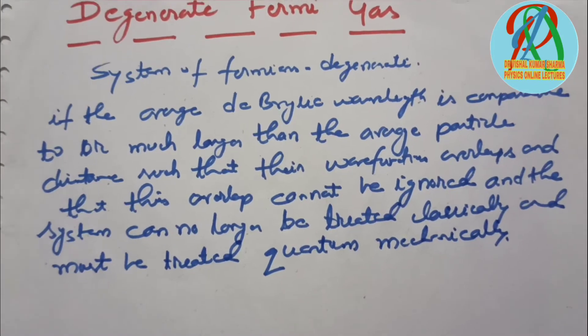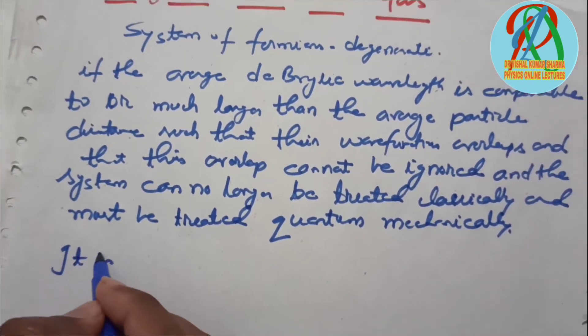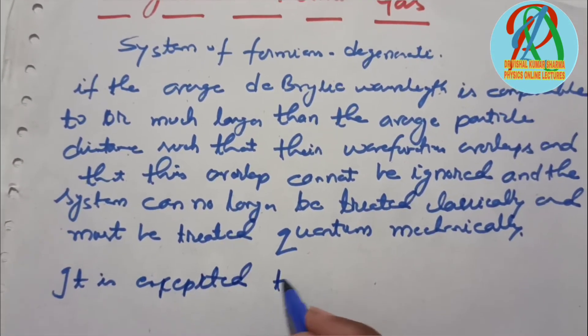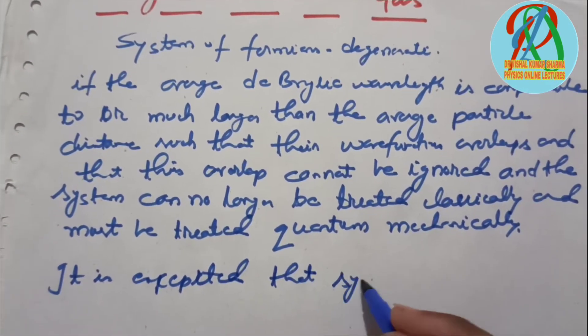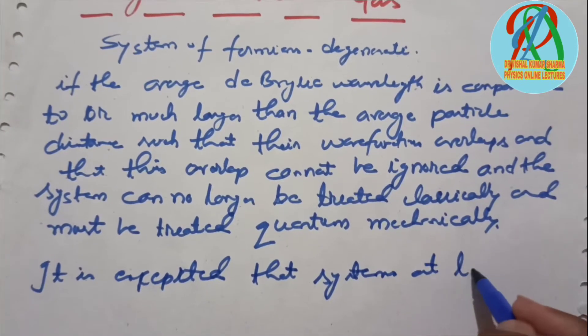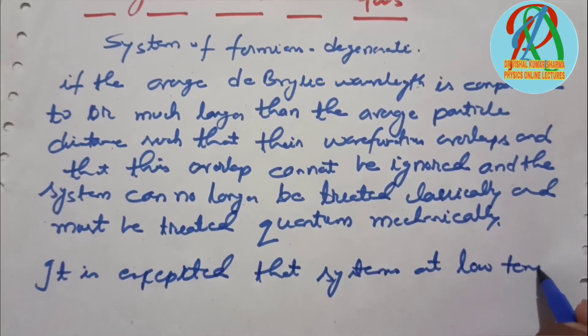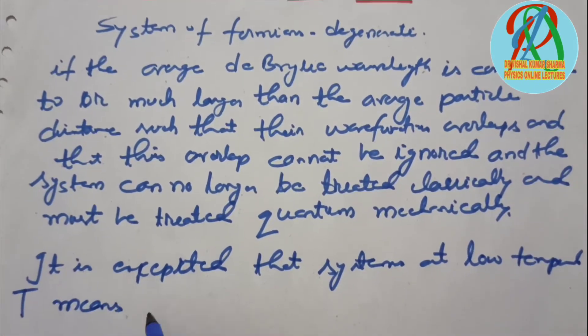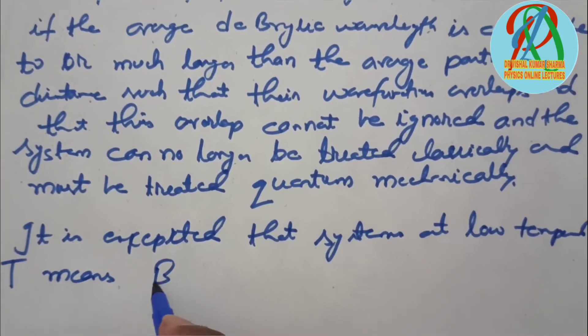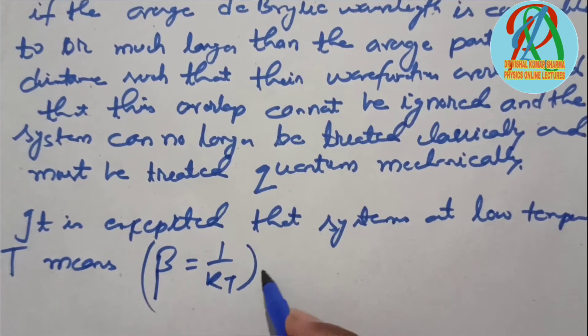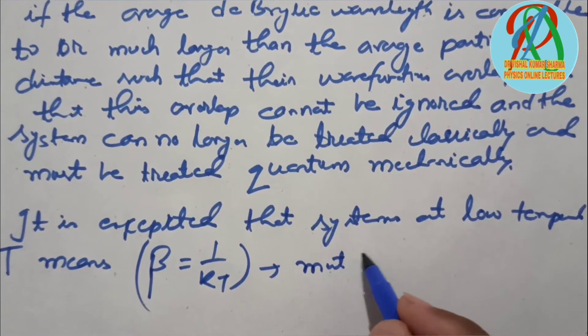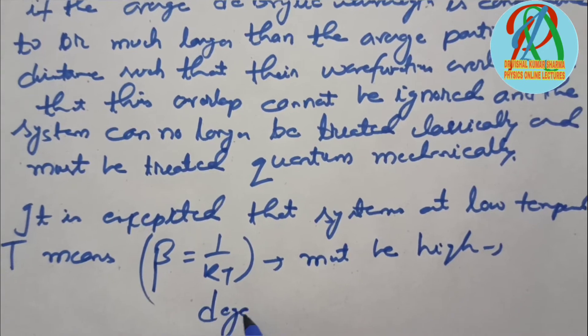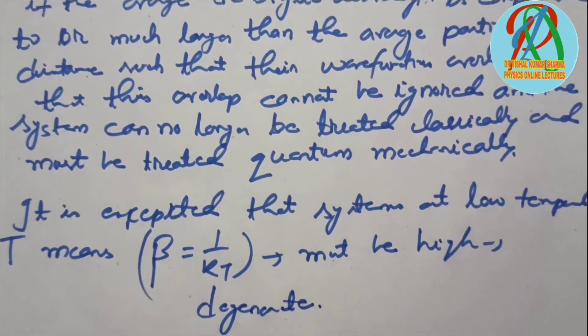It is expected that systems at low temperature T, where the value of beta (β = 1/kT) must be high, are said to be degenerate.